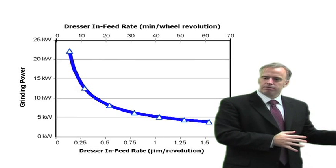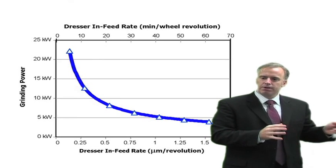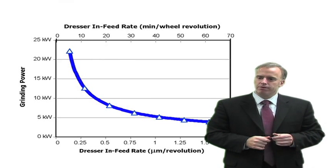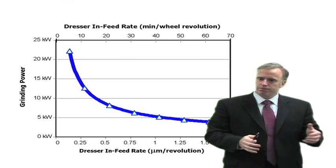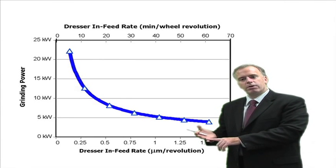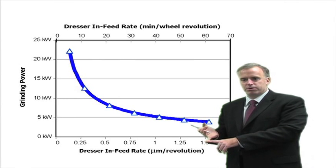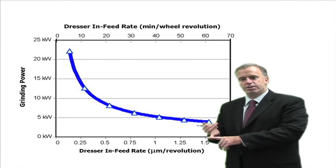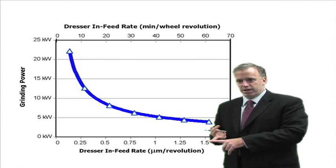You want to dress very aggressively, maybe 1.5 microns per rev to keep your wheel sharp, but then you consume your wheel. On the other hand, you can dress very slow, maybe 0.25 microns per rev, save your wheel, but get a very dull wheel and generate a lot of heat.